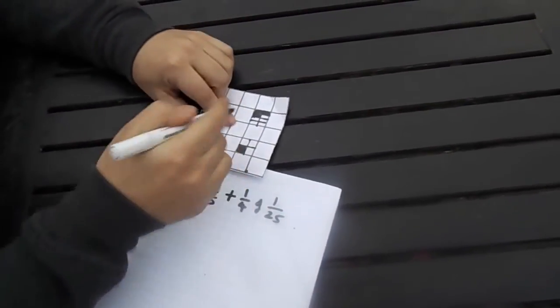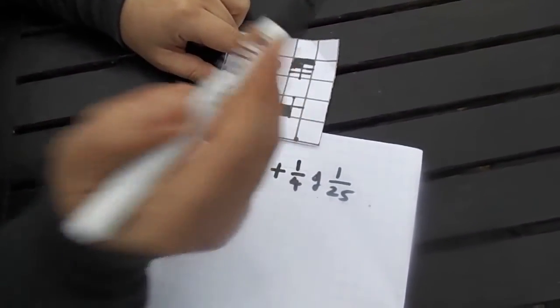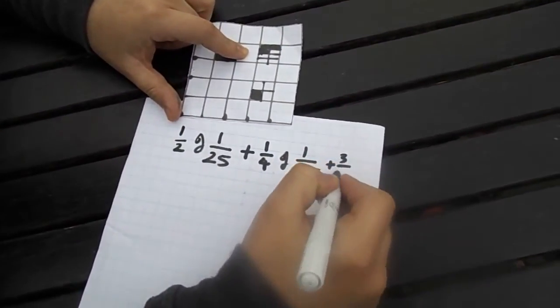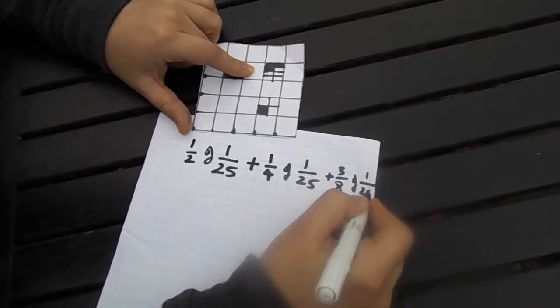And I've got here, this one's been split into eight equal pieces, three of those have been shaded in. So that is 3 eighths of a square out of 25.